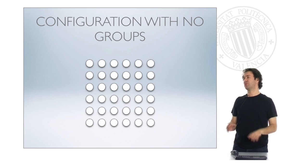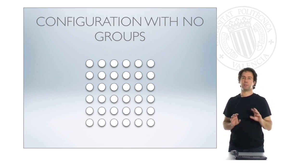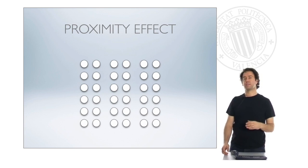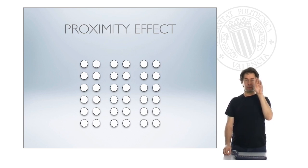What happens when we introduce differences in distance between the different elements? If we do this, we have a proximity effect and this means that everyone here perceives three groups of circles which are one column, one column, one column. There are three columns made of two different colors of circles.